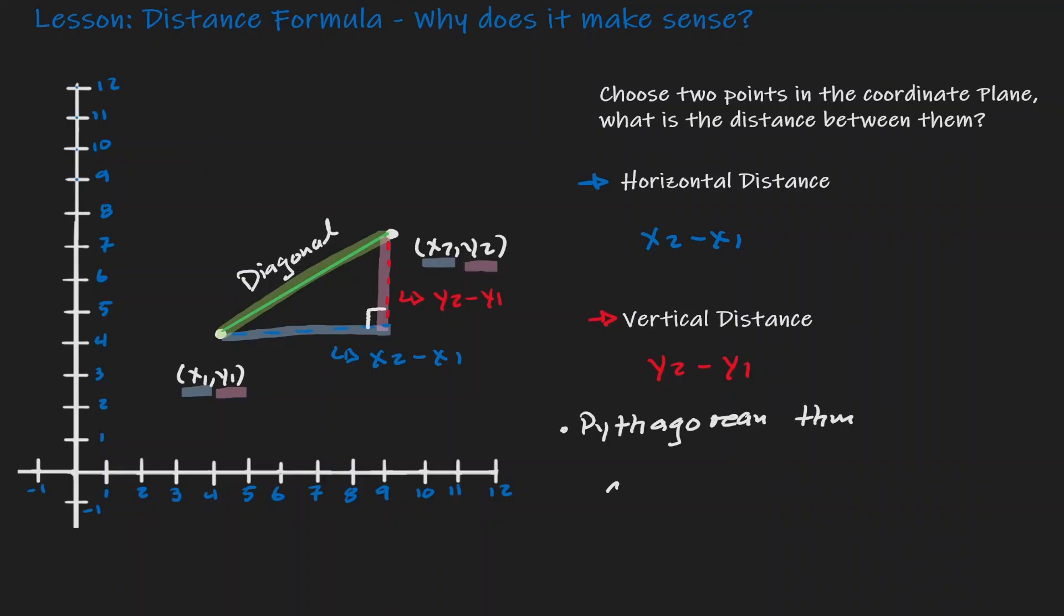The Pythagorean theorem is a square plus b square equals c square. And remember that a and b are the legs of this right triangle. Now we can let a be the horizontal distance, but notice that we know an expression for that, that's x2 minus x1. And now b is the value of the second leg, which is the vertical distance. We have an expression for that, y2 minus y1.